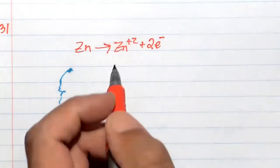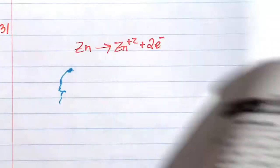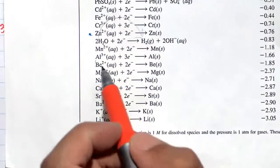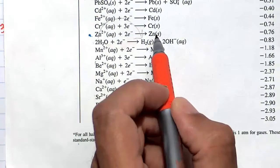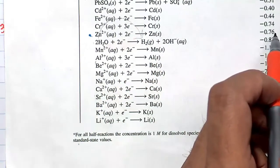In the problem we have zinc going to zinc plus two. Where is that here? That's right here. Zinc going to zinc plus two. We're going to have to flip it, so it's going to be positive 0.76 volts.